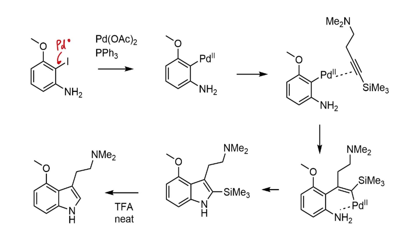The arylpalladium coordinates to the alkyne and a syn-carbopalladation occurs, with palladium directed to the more hindered terminus — the terminus bearing the trimethylsilyl group — forming the new carbon–carbon bond. This carbopalladation positions the palladium close to the nitrogen, so after ligand exchange the nitrogen coordinates onto the palladium and a reductive elimination occurs to form the carbon–nitrogen bond, completing the indole ring. After reductive elimination, palladium(0) re-enters the catalytic cycle. The trimethylsilyl group is then removed by overnight treatment with trifluoroacetic acid in a protodesilylation.